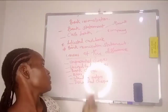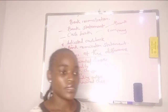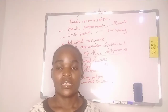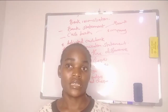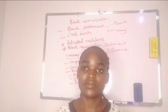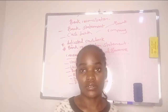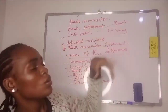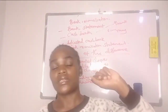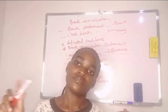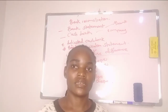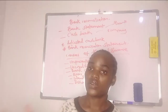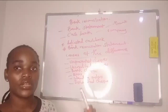The second cause is uncredited deposits — debited in the cash book but not credited in the bank. Then we have bank charges: sometimes the bank charges fees, which can be monthly or annually. These charges are recorded in the bank statement but not in the cash book, causing a difference. Errors — whether company errors in the cash book or bank errors in the bank statement — such as overstating, understating, or omissions, can also cause differences.